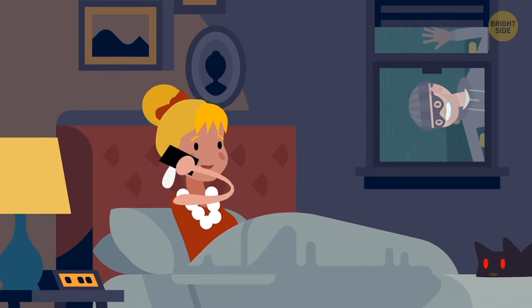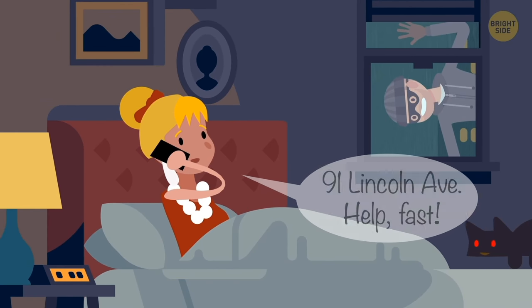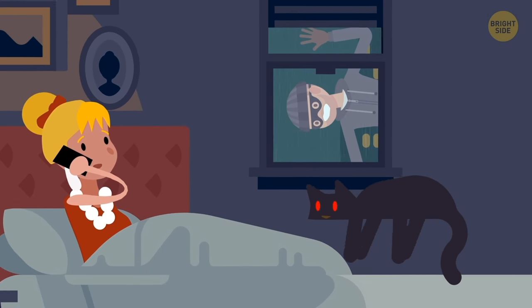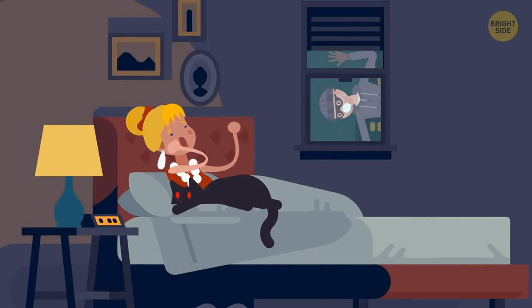If you're calling an emergency service, first of all, give them your address. Only after that should you explain the reason for your call. In this case, even if something or somebody forces you to end the conversation, the operator will already know where to send help.